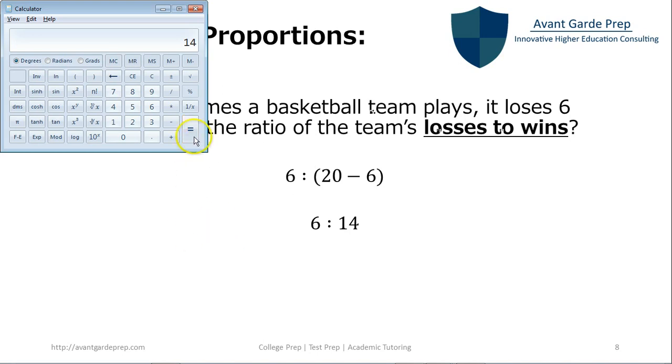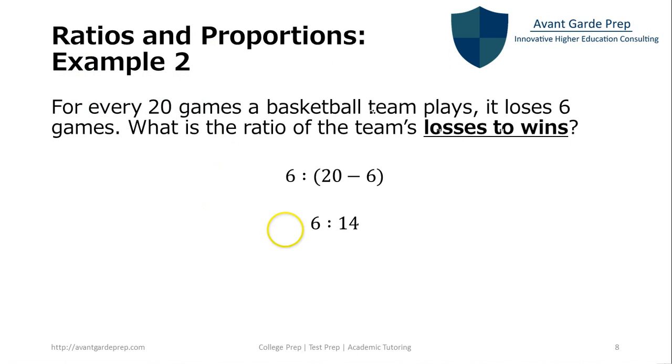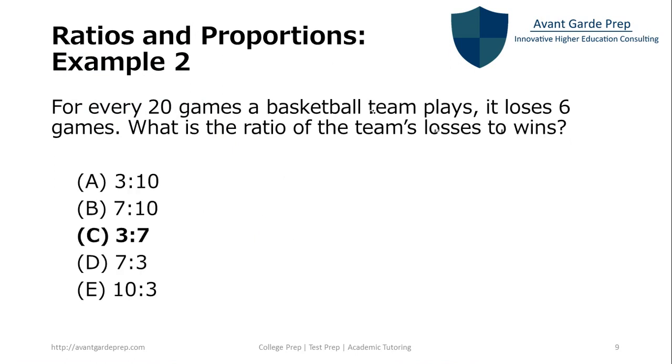But that's not in reduced form because these both can be divided by two. And so we actually get three to seven. And if we look back at the original problem, answer choice C is indeed three to seven. So the ratio of losses to wins is three to seven. So every three games they lose, they win seven games.